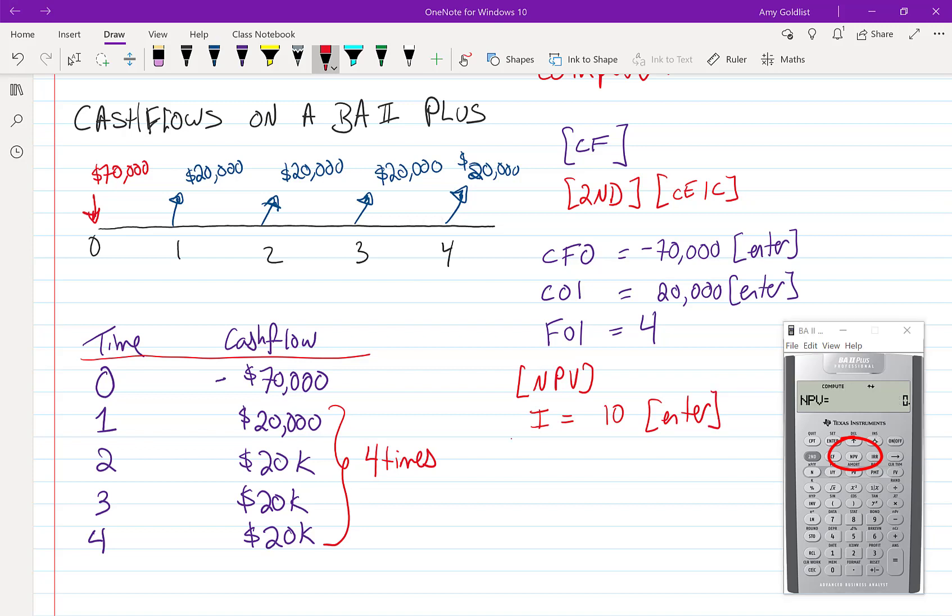I'm going to scroll down and I get to NPV and all I do is press compute. CPT, compute. And now I get an answer. That was negative $6,602.69. Exactly what we came up with earlier. Very useful.